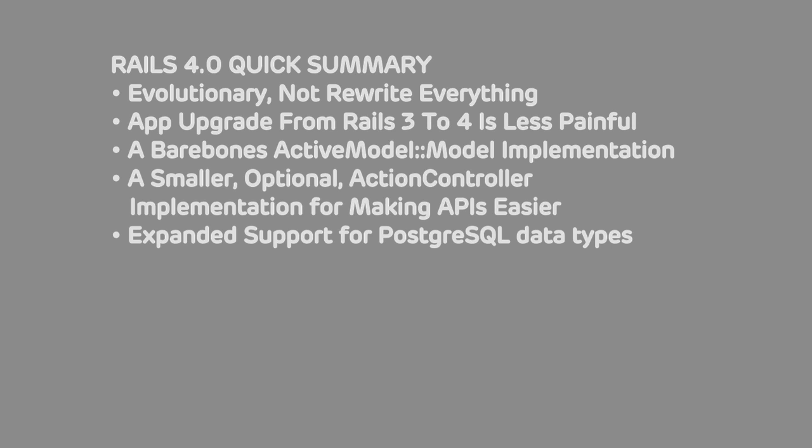There's expanded support for PostgreSQL — and its native types. There is also a queue being built into Rails. Oftentimes when you are coding a web application, you might want something to happen outside of the request-response cycle. Maybe you go through and update a bunch of people's statuses. This is something that would take way too long if you're waiting for that request to complete. So you can use a queue, which is a separate process that operates on your app's environment. Rails 4.0 is going to have one built in that you can optionally use.